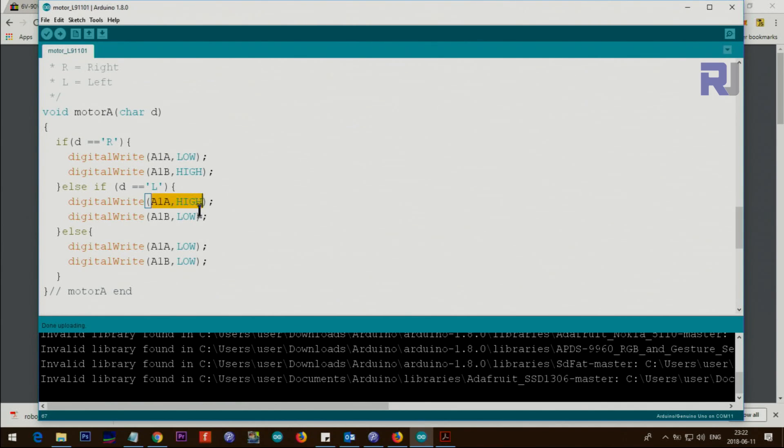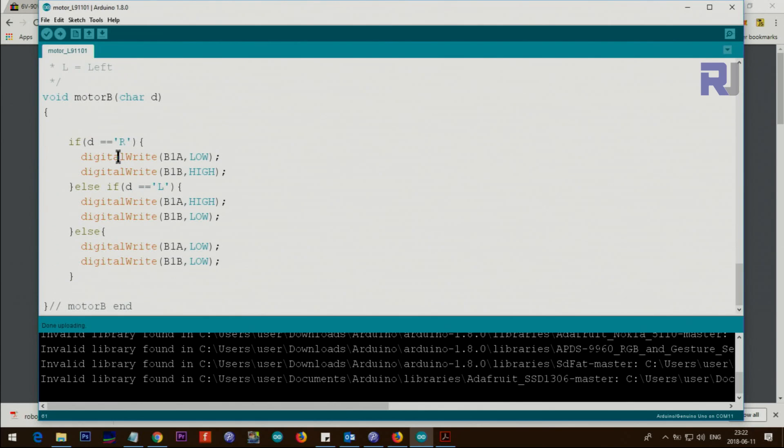If it's L, we just go in the opposite. When A1A was low, this one is high. So we just change the polarity and the motor rotates the other way. When this is not R and L, this must be something else, so it will stop. A1A is low and A1B is low. When both of these are low, the motor will stop. The same thing for motor B, we did the same thing here.